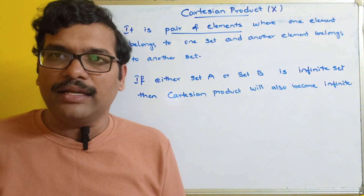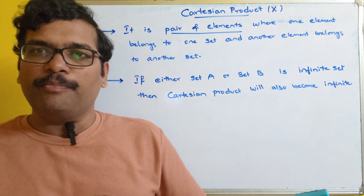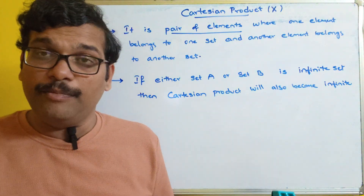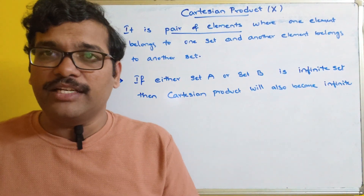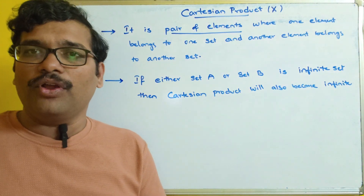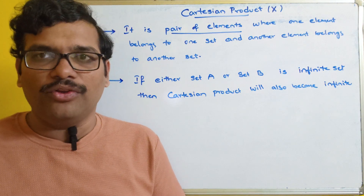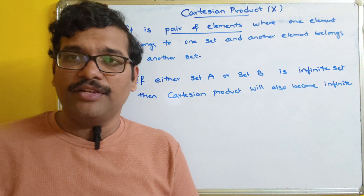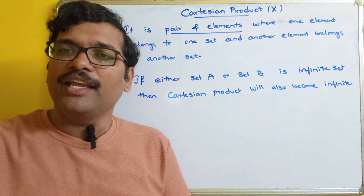So we have seen what is the Cartesian product — a pair of elements where one element belongs to one set and another belongs to another set — and this can be applied for two sets or multiple sets. If you have any queries or doubts, feel free to post them in the comment section and I will try to clarify. If you enjoyed the session, please like, share with your friends, and don't forget to subscribe to our channel. Thanks for watching.